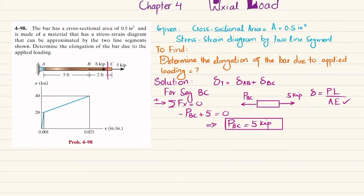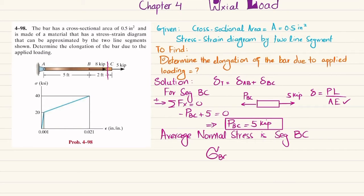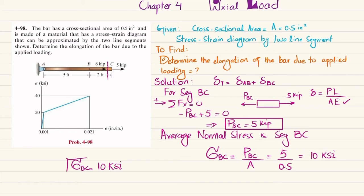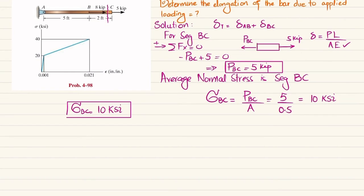Now we find the average normal stress in segment BC. Sigma_BC equals P_BC divided by area. P_BC is 5 kips and the area is 0.5 square inch, so when you solve this you get 10 ksi. The stress in segment BC is equal to 10 ksi.